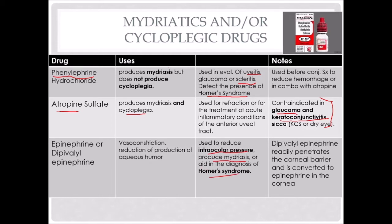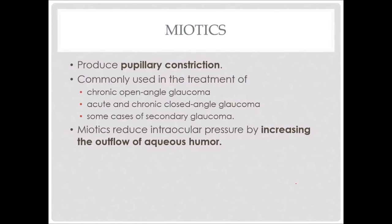Mydriasis is to dilate the pupil. Miotics will produce pupillary constriction. We will use this in the treatment of chronic open angle glaucoma, acute and chronic closed angle glaucoma, and some cases of secondary glaucoma. Typically, when we constrict the pupil we are relieving the pressure in the eye by allowing the outflow of the aqueous humor — so we're opening the drain up to relieve the pressure.